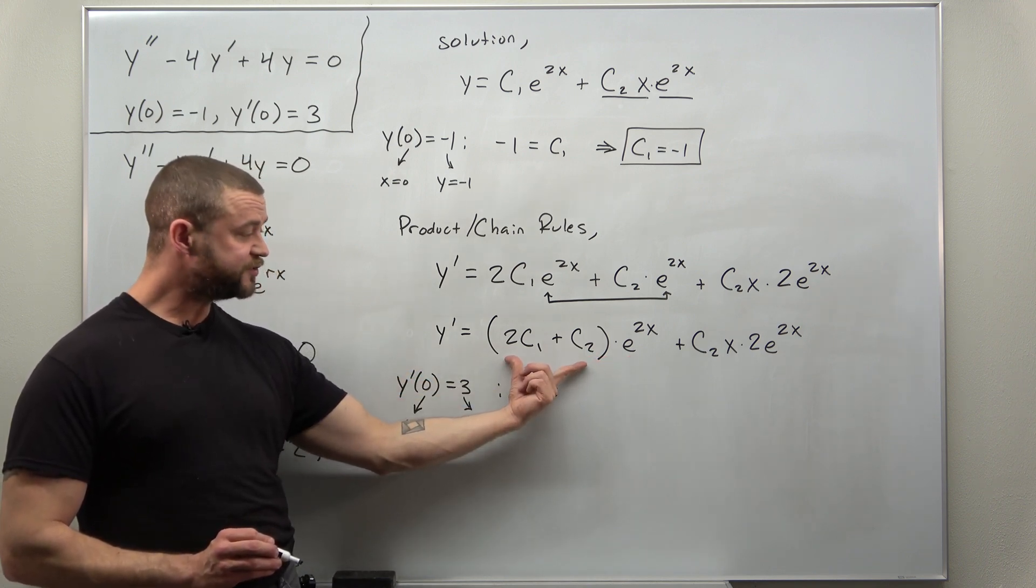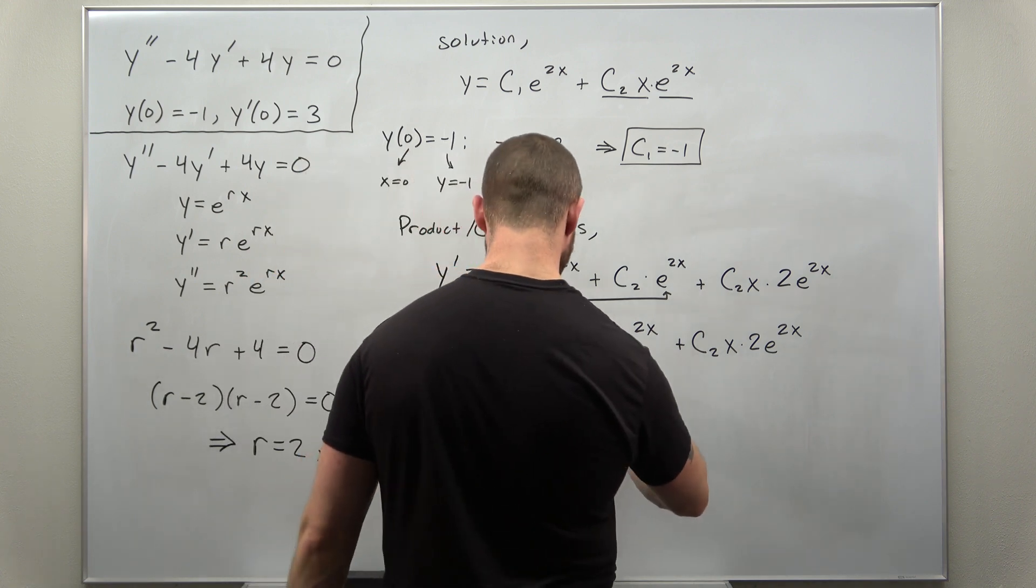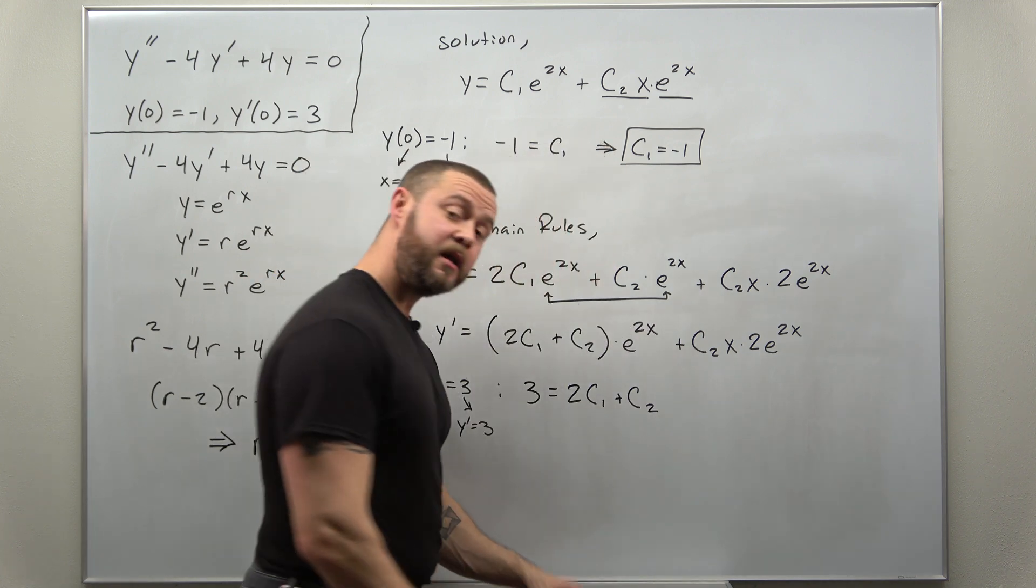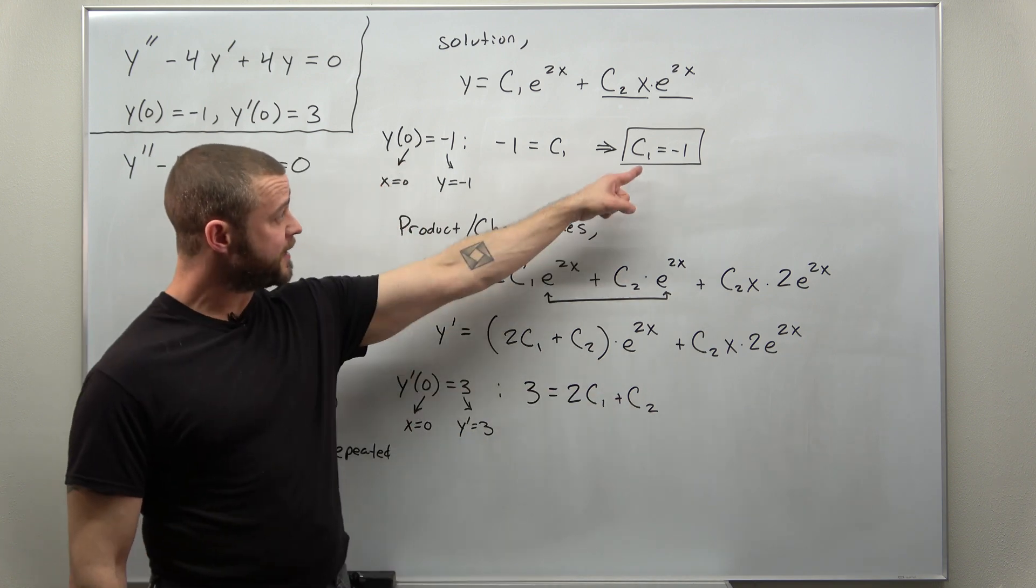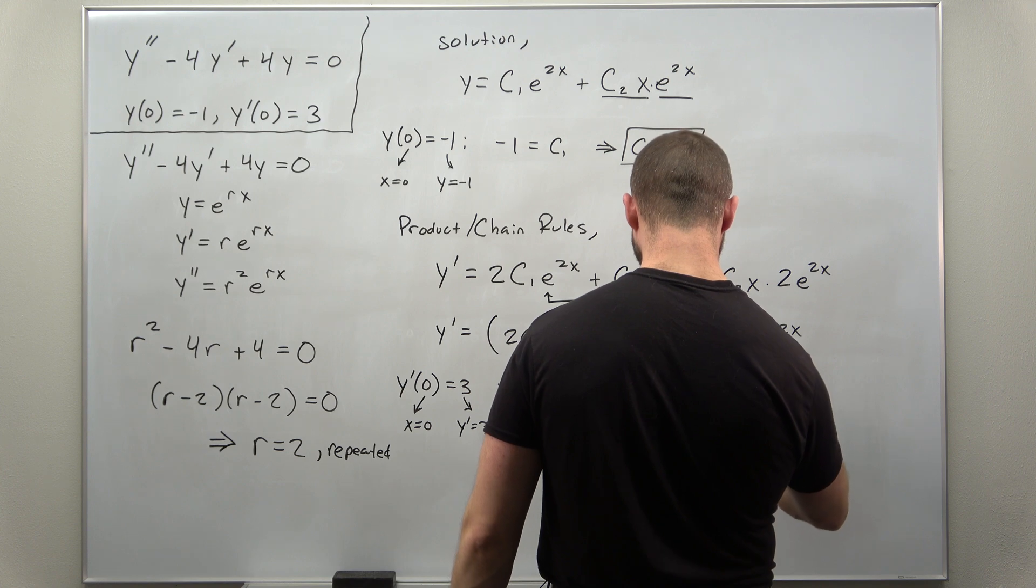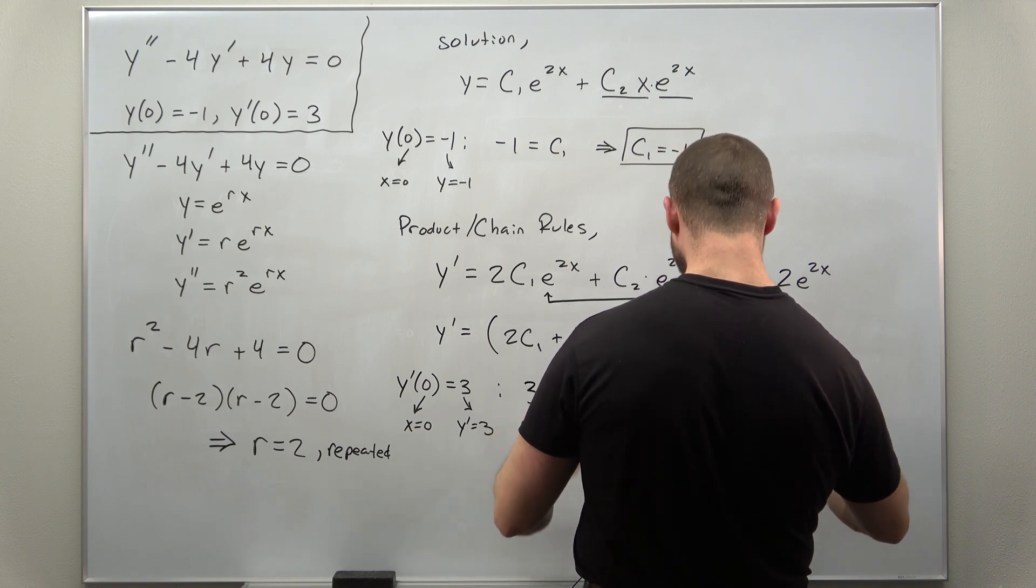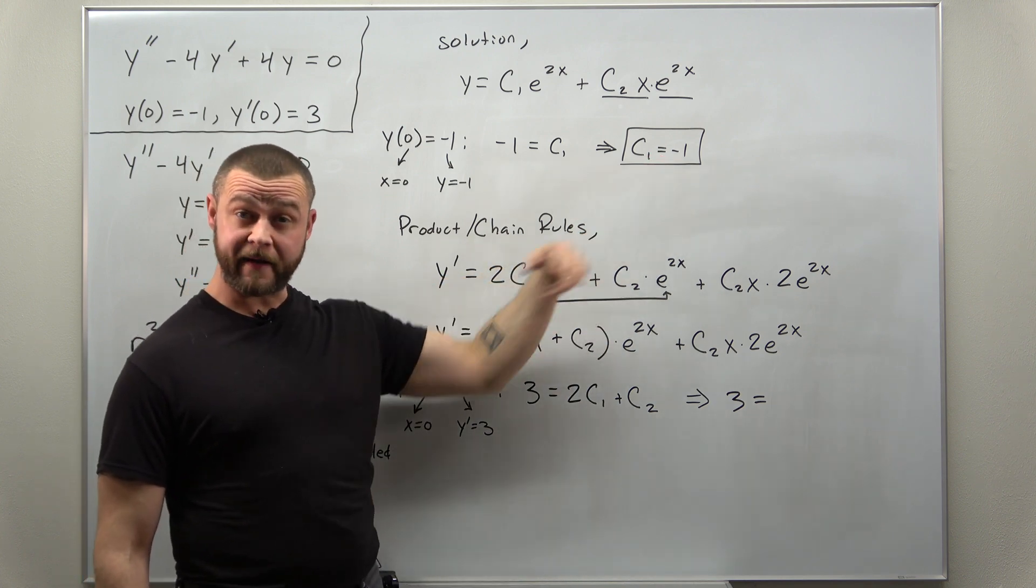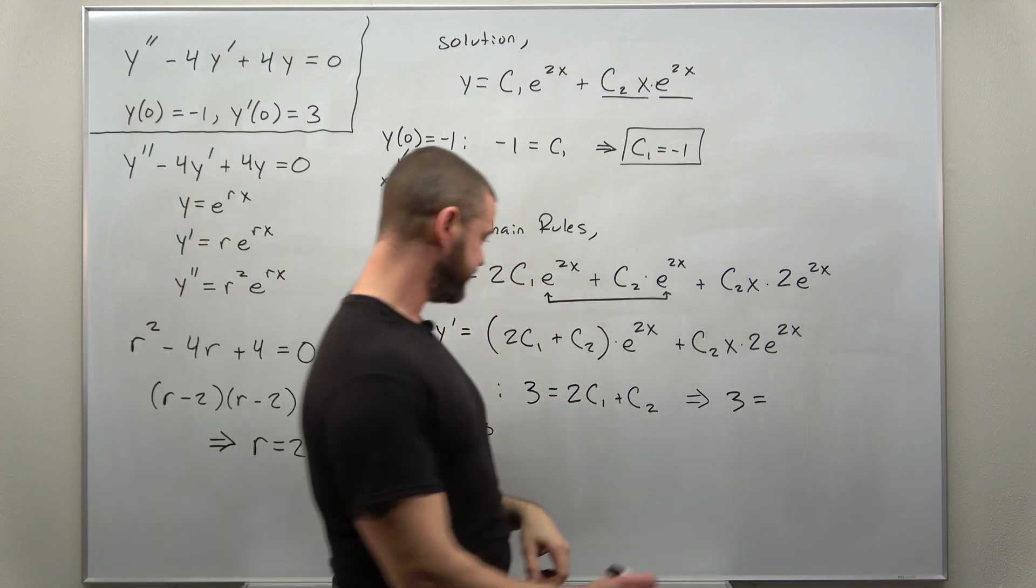So we're just left with 2c1 plus c2, and notice we already know the value for c1. If we plug that in we have the simple equation 3, and again we're going to replace c1 with the value that we found, negative 1. So that'll turn to negative 2.